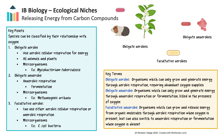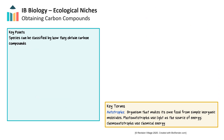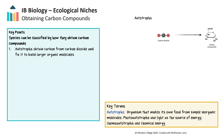We've discussed how organisms release energy from carbon compounds with or without oxygen. Now let's examine how organisms obtain these carbon compounds. Organisms can be classified by how they obtain energy-rich carbon compounds that they break down to release energy. The two major categories are autotrophs and heterotrophs. Autotrophs obtain carbon from inorganic carbon sources like carbon dioxide, which they convert, or fix, into larger organic molecules like glucose.